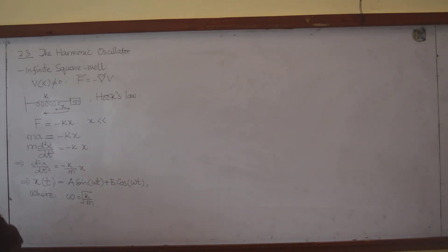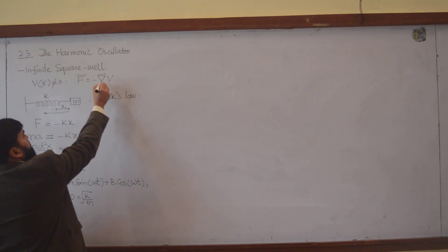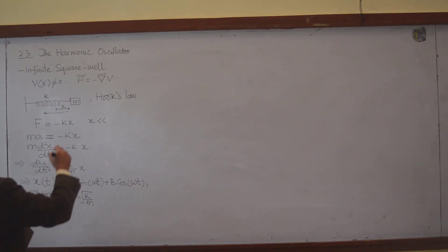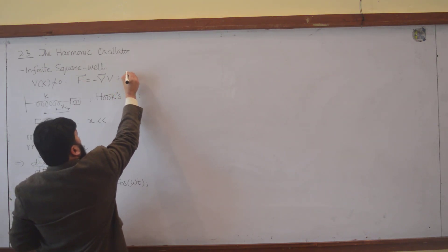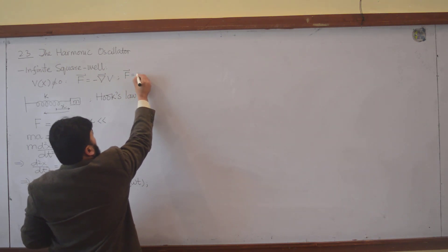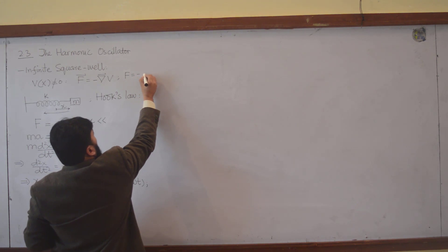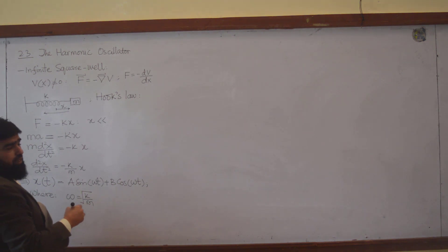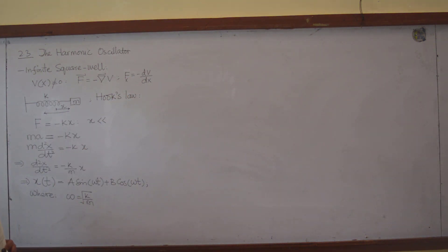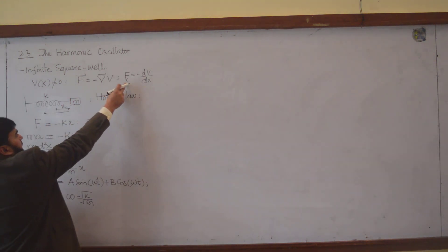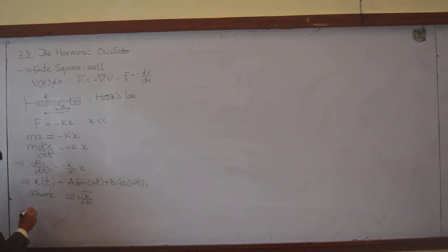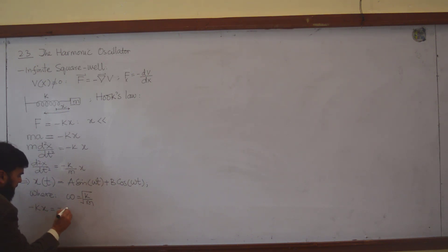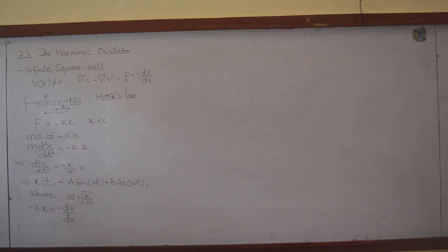We know that F equals minus the gradient of V. In one dimension, I can write this in scalar form as F equals minus dV/dx, which gives only the Fx component. If I write F equals minus KX and also F equals minus dV/dx, then setting these equal, the two minus signs cancel.